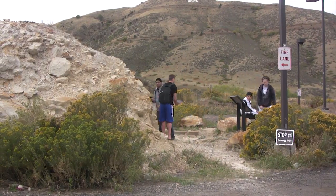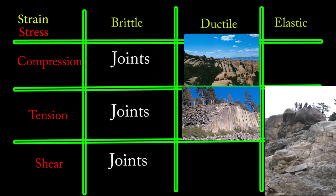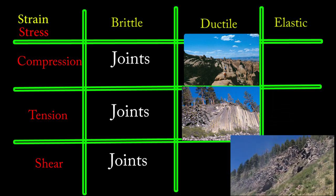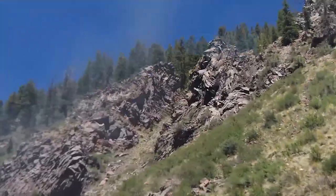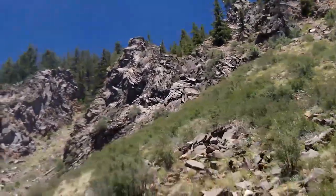When we come back next time, we will finish off our structural chart to see what ductile strain can produce with compression, tension, and shear, and finish off with a structure called joints, seen in more mildly stressed rocks. And I hope you remain only mildly stressed until next time, here on Earth Explorations.